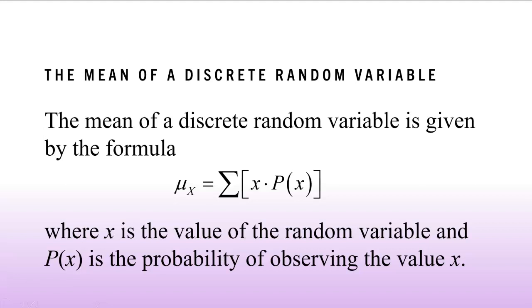So let's jump right in and look at what is the mean. The mean of a discrete random variable is given by the formula. So remember, this is Greek letter mu. So mu of X, this is our random variable X, is equal to the sum of each individual data point times its probability. So you have to find the product of each individual data point and its probability and then add all of those up.